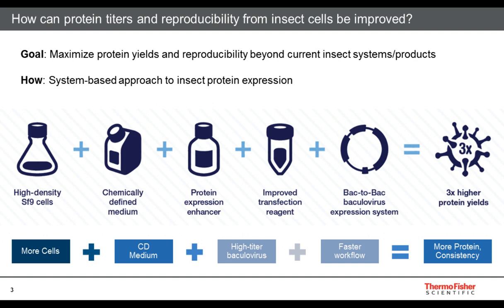We took a system-based approach, beginning with the development of fully chemically defined media. By removing hydrolysate and any undefined components, we achieved great run-to-run consistency. We added SF9 cells adapted to chemically defined media that grow to high densities, a protein expression enhancer that boosts protein expression to at least three times higher titers, and an improved transfection reagent that shortens the time from DNA to protein expression.